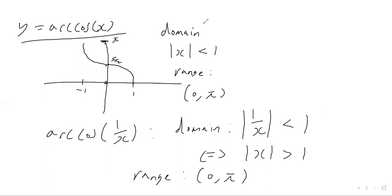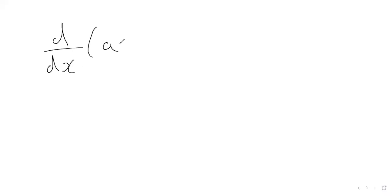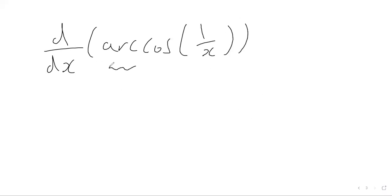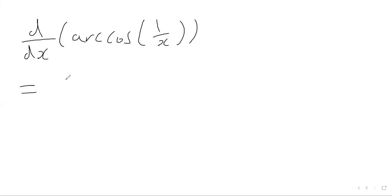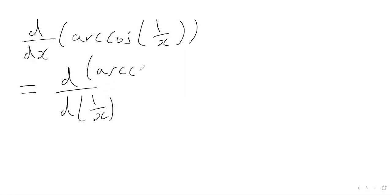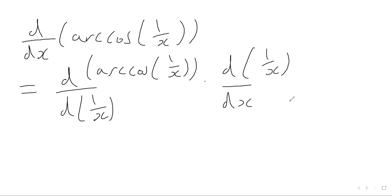So let's go on and start differentiating the function. It's going to be a case of using the chain rule. We want to differentiate with respect to x the function arccos of 1 over x. It's a chain rule problem because we've got a function — arccos — of another function, the reciprocal function, which is a function of x. Using the chain rule, we differentiate arccos of 1 over x with respect to 1 over x, and multiply by the derivative of 1 over x with respect to x.